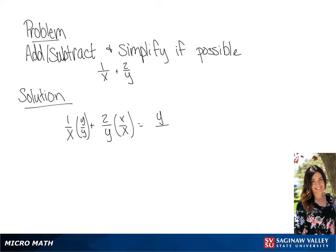This is going to give us y over xy plus 2x over xy. For our final answer, we will get 2x plus y, all over xy.